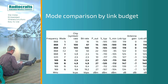We can compare the link budget between these modes. I have highlighted the T mode, the C mode, and the N mode. To the left we see the frequency band and then the mode, followed by the chip or symbol rate, and then the bit rate which depends on the type of coding used.